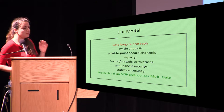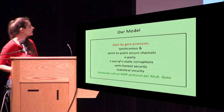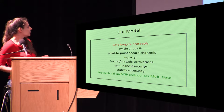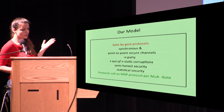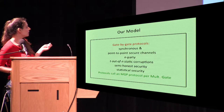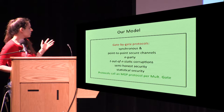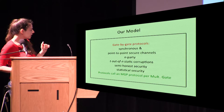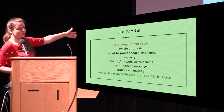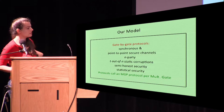Let me be specific about the model. We are in synchronous point-to-point secure channels, with n-party protocols, t-out-of-n static corruptions, semi-honest security, and statistical security. The weaker the assumptions, the stronger the impossibility results.